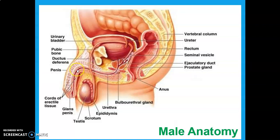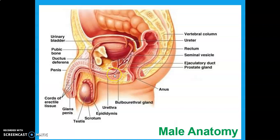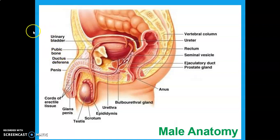This is called the ejaculatory duct. In men — here's the urinary bladder — the reproductive tract and the urinary tract come together very early on, which is different in men than in women, and they combine in the urethra. So they actually come out the same opening, which will be different in females. The prostate gland provides some of the fluid for semen. The bulbourethral gland helps lubricate the penis. The erectile tissue will engorge with blood, the penis stands upright, and then out the sperm go to try to find an egg.